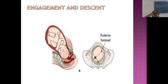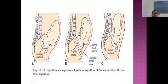Engagement and descent: you can see how the head has engaged and is descending. On per vaginum examination, you can feel the posterior fontanel and anterior fontanel. There is synclitism and asynclitism — anterior synclitism and asynclitism. This is normal synclitism and posterior synclitism, showing how the head is rotating in different positions.